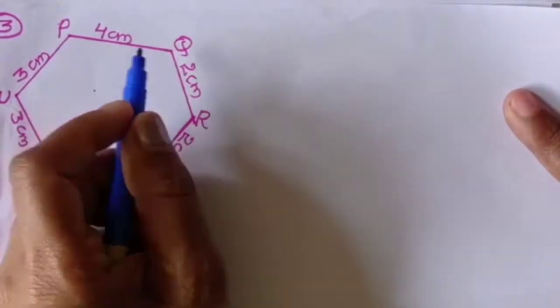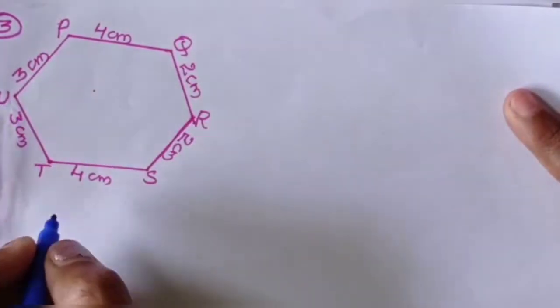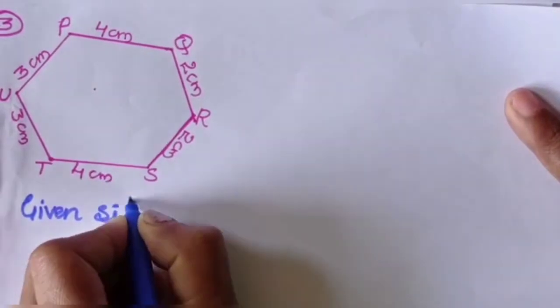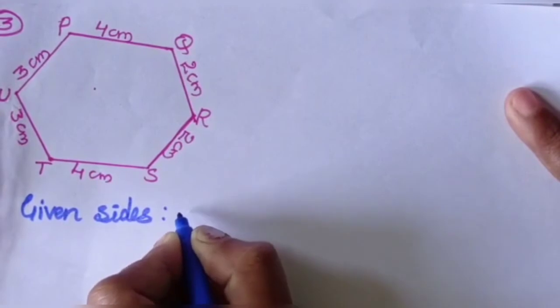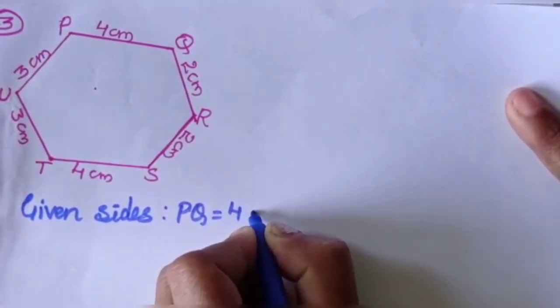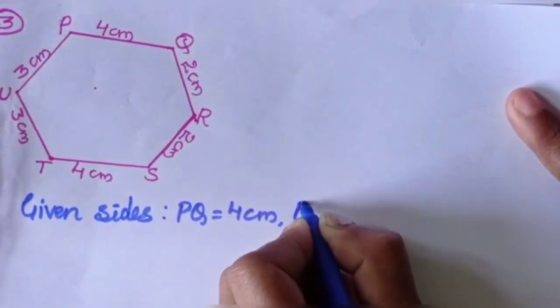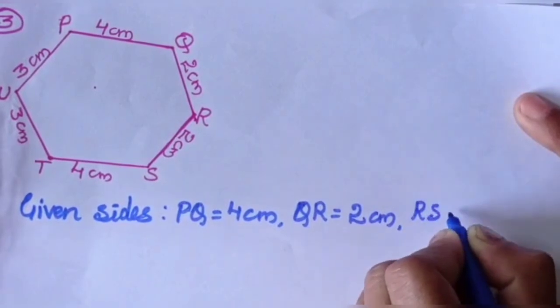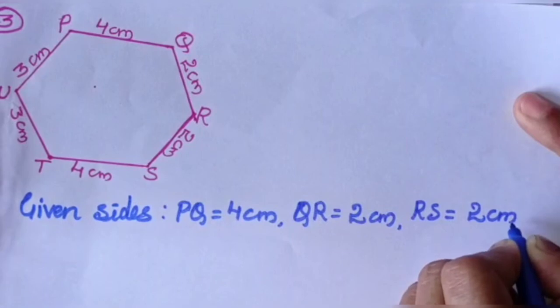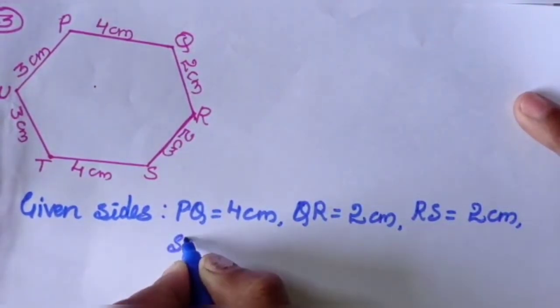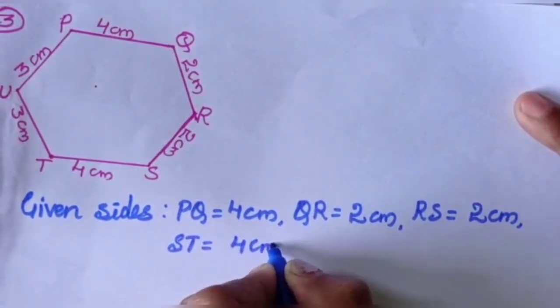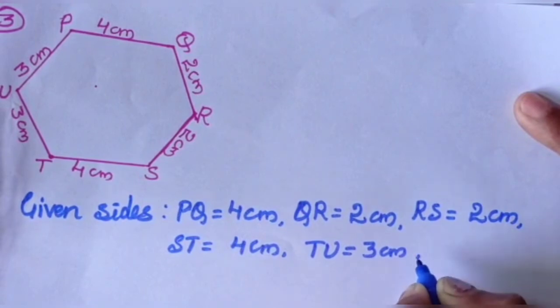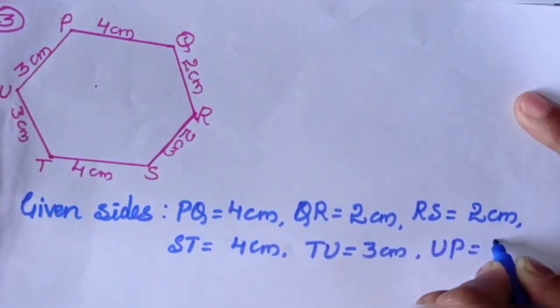Third one question. Observe the figure P, Q, R, S, T, U. Write the first of all given sides. PQ equals 4 cm, QR equals 2 cm, RS equals 2 cm, ST equals 4 cm, TU equals 3 cm, UP equals 3 cm.